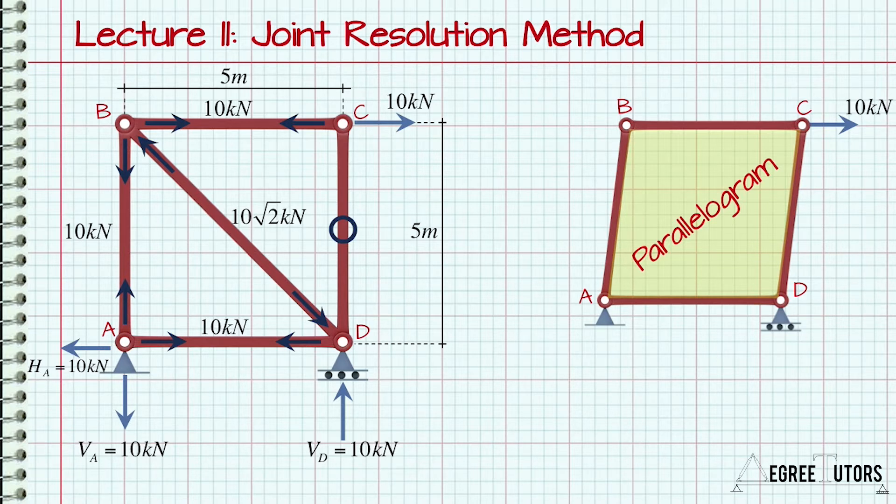Therefore, it would make sense to us that member BD is in a state of compression trying to stop this from happening. If we removed member BD and replaced it with a diagonal between nodes A and C, this member would be in tension trying to stop nodes A and C moving away from each other under the action of the externally applied load. This type of visualization is a good exercise to do at the end of each solution. Try and find the logical reasons why the forces are the way they are.